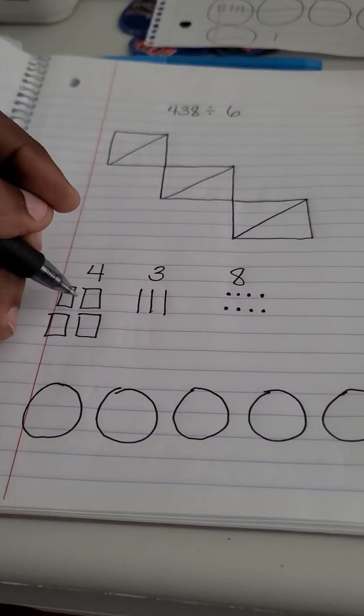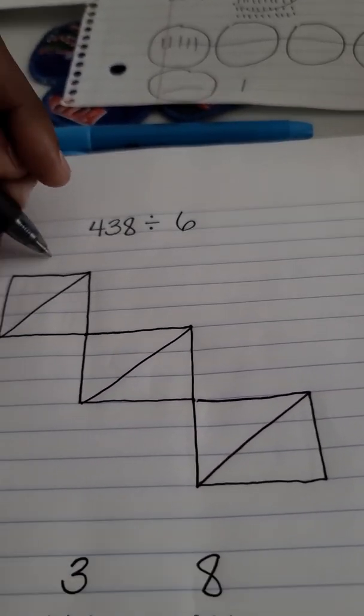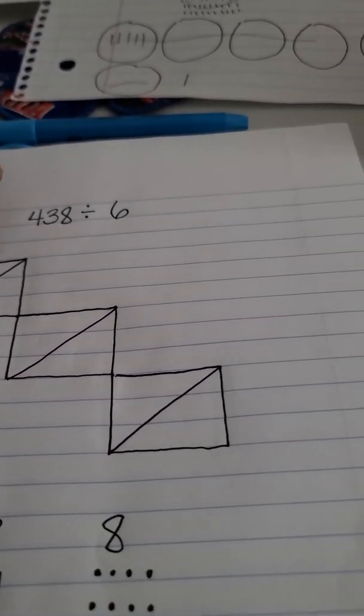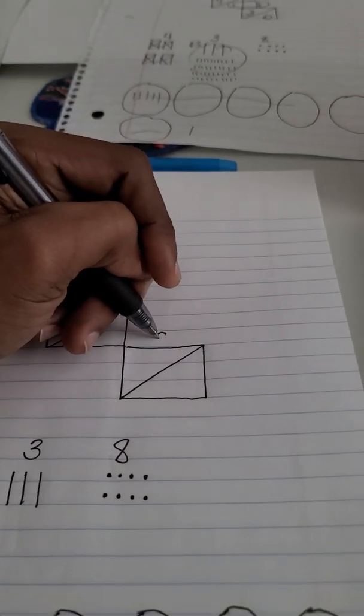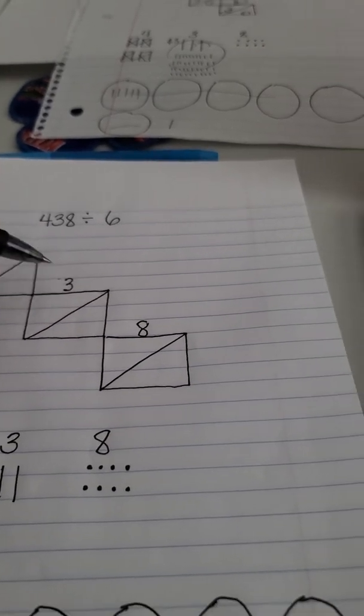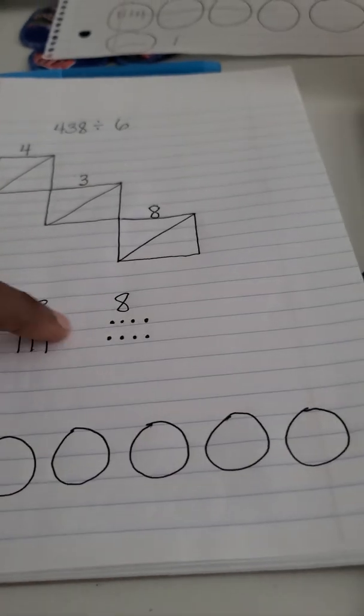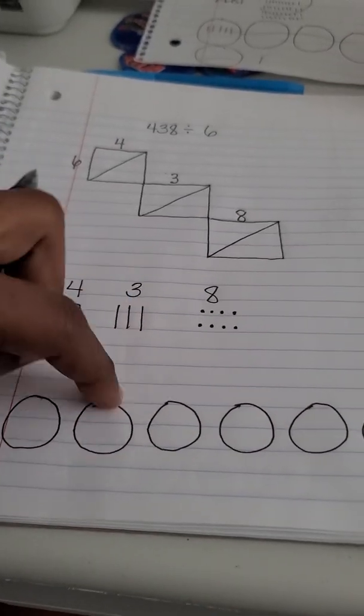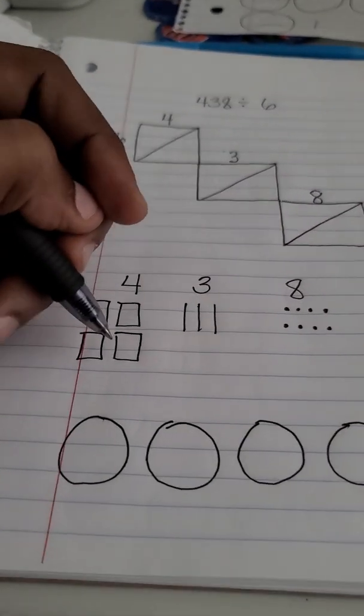We start with the hundreds first. Let me fill out my chart here. We start by breaking apart my place value: four, three, eight. So my hundreds box, my tens box, my ones box. This is my model. I'm going to do these things together so you can see how it works.